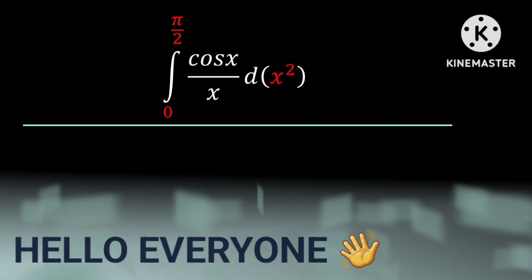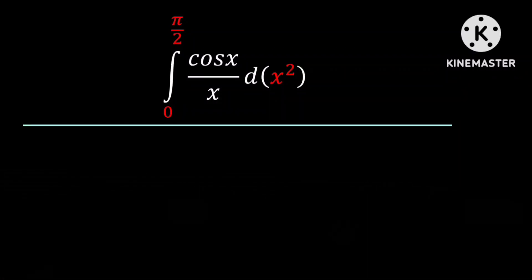Hello everyone, you are once more welcome to this channel. In this lesson we are going to be evaluating the integral from 0 to pi over 2 of cosine x divided by x with respect to x squared. This is different from our regular integrals because the integration is not with respect to x. Here we are integrating with respect to x squared.